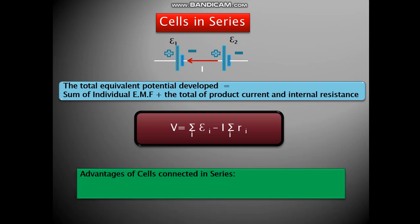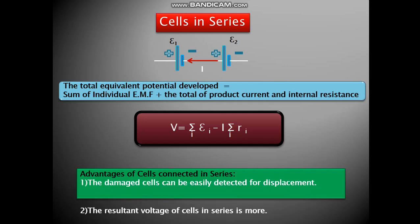Advantages of cells connected in series are the damaged cells can be easily detected for displacement. The resultant voltage of the cells in series can be increased.